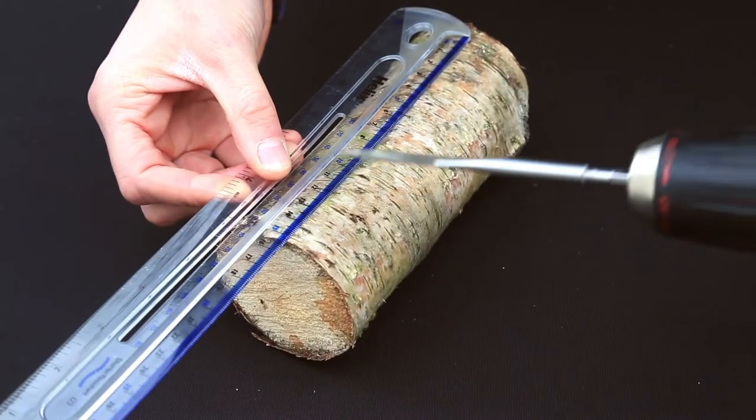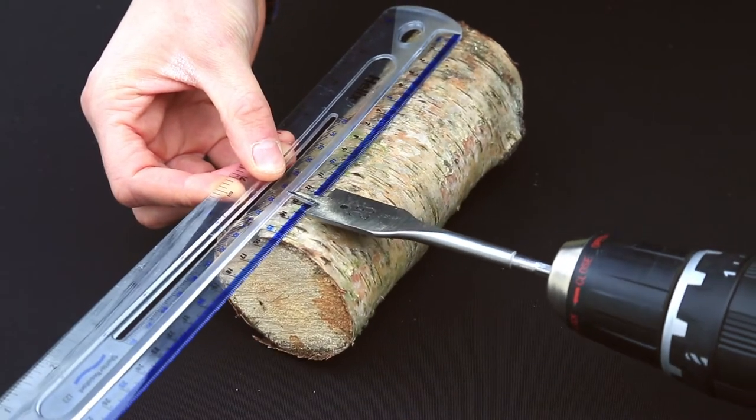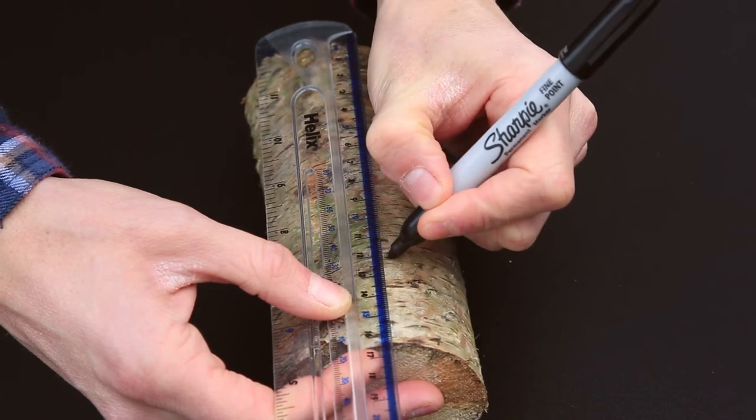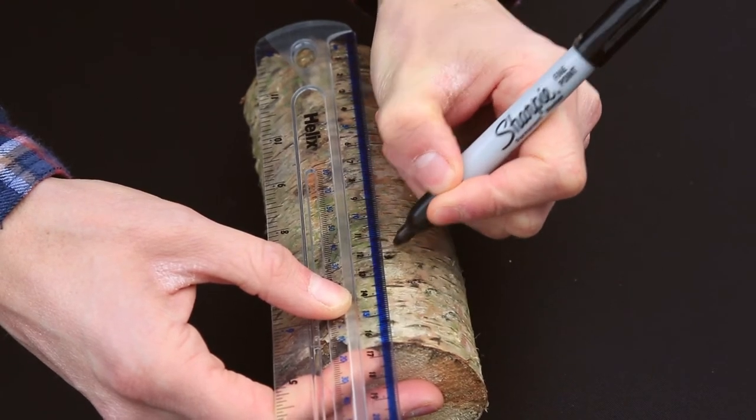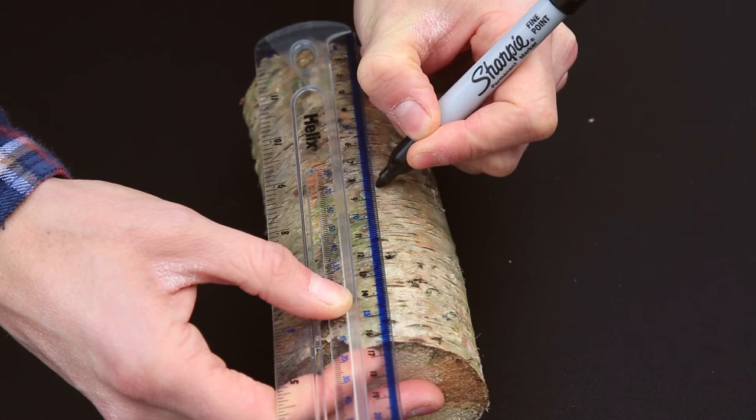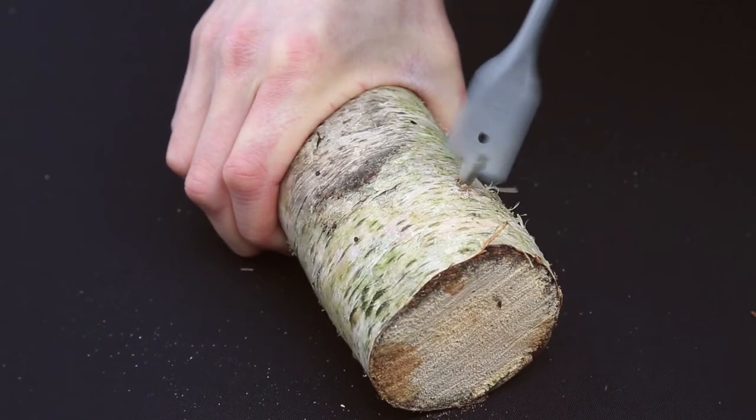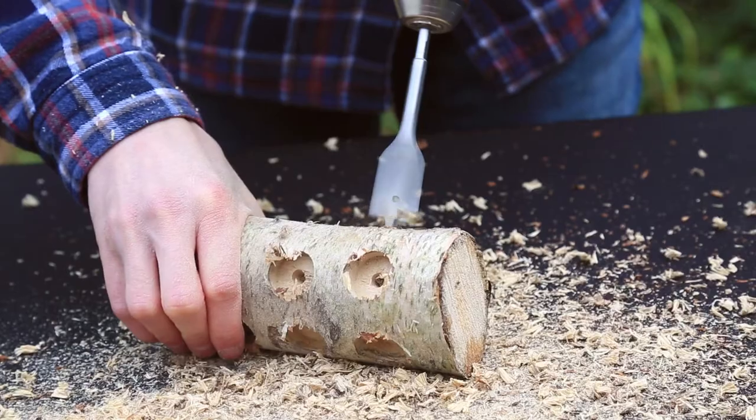The first step is to drill holes into the log. We try to keep it as neat as possible, spacing them evenly. The best way to do this is to mark the holes with a pen and a ruler first. Each hole should be about 2 to 3 centimetres deep.